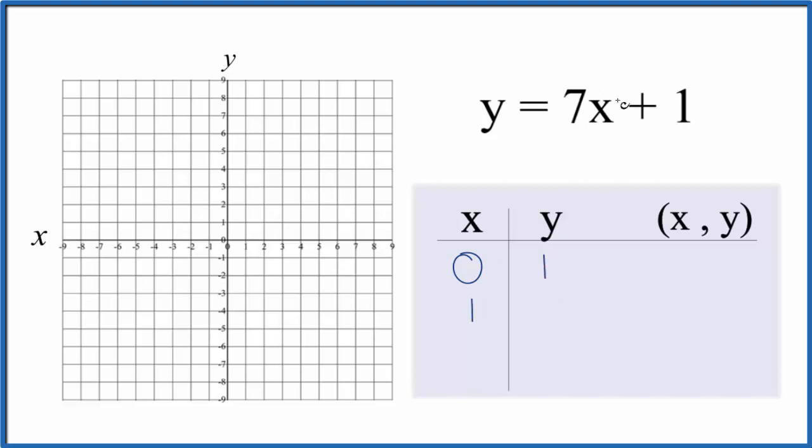How about 1? 7 times 1 is 7, plus 1 that gives us 8, and then negative 1. 7 times negative 1 that's negative 7, plus 1 that would be negative 6. So these are the points that we'll graph for the line y equals 7x plus 1.